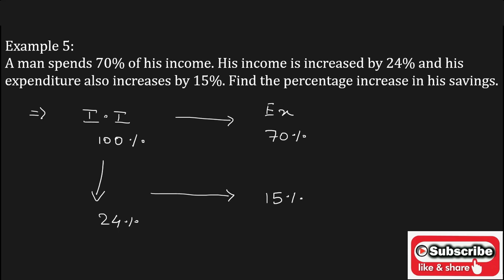Now, we have to find the percentage increase in his saving. The formula will be 100 into y minus x into z upon 100 minus x percentage. This is the formula to find the percentage increase or decrease in his savings.